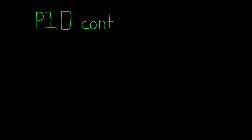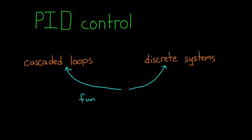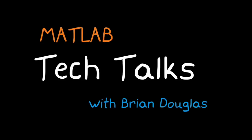With the overview of PID tuning techniques behind us, we can now move on to discussing two very important concepts with PID control: cascaded loops and discrete systems. Both of these concepts are fundamental to most practical control systems, and they each change the way you approach and think about your problem. Therefore, I think they are worth spending some time to discuss in a bit more detail. I'm Brian, and welcome to a MATLAB Tech Talk.